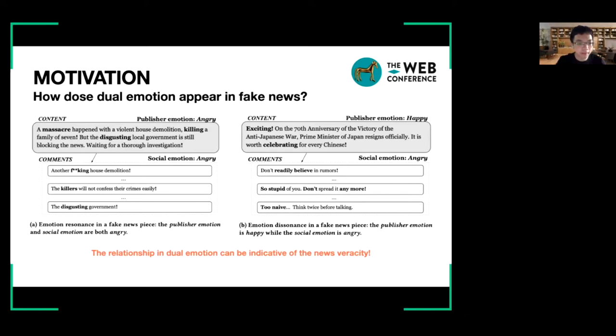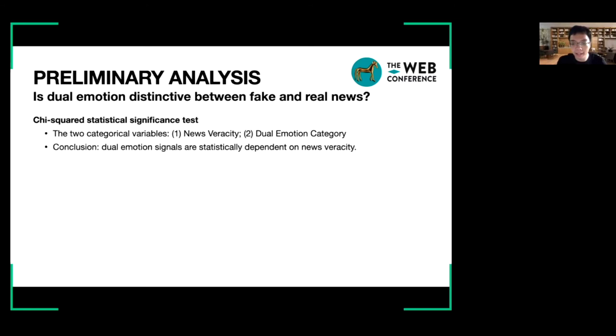In a word, this finding indicates that it is very possible that the relationship in dual emotion can be indicative of the news veracity. We check whether it is statistically dependent or not between dual emotion signals and the veracity of news pieces.